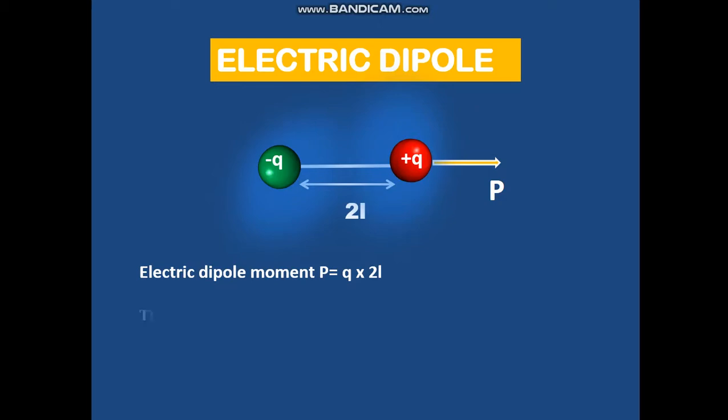Let us consider negative and positive charge separated by a distance 2a. We have the dipole moment, electric dipole moment P, which passes from the negative charge towards the positive charge. It is given by the product of charge Q into the distance 2a. So P equals Q times 2a. The direction of the electric dipole moment is from negative to positive.